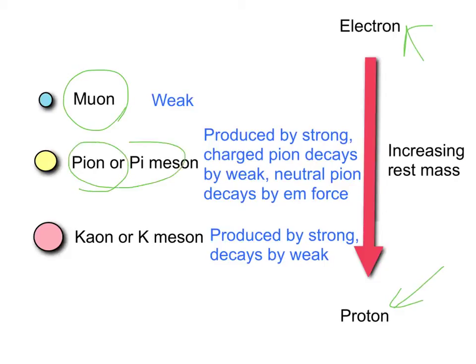Next one up we have the pion or pi meson. This has a larger mass than the muon but smaller than a proton. A pion can be positively charged, negatively charged or neutral.